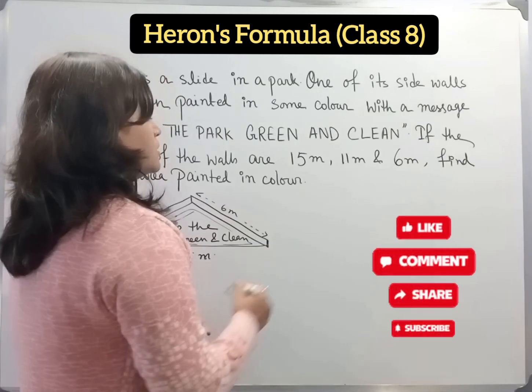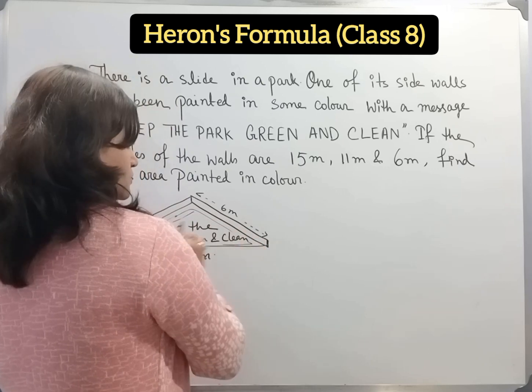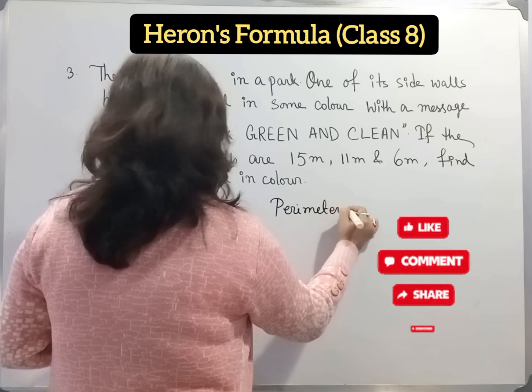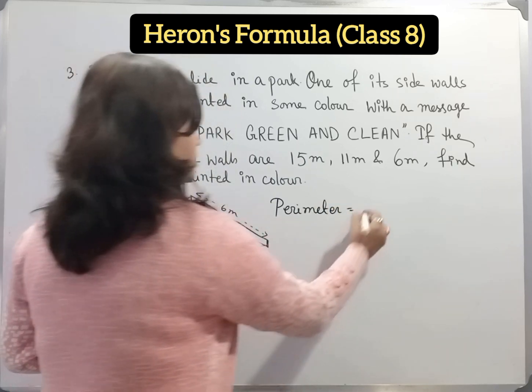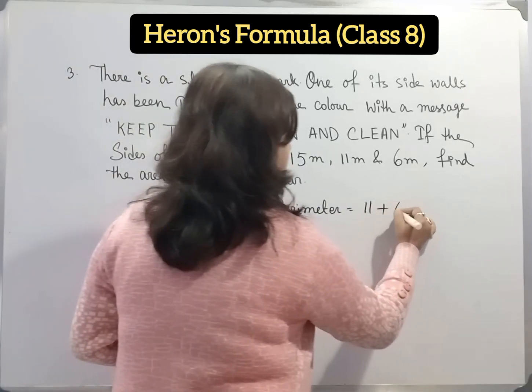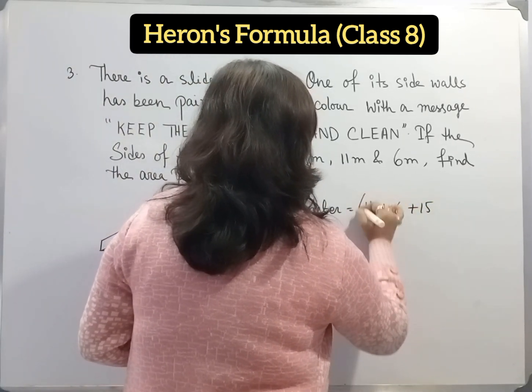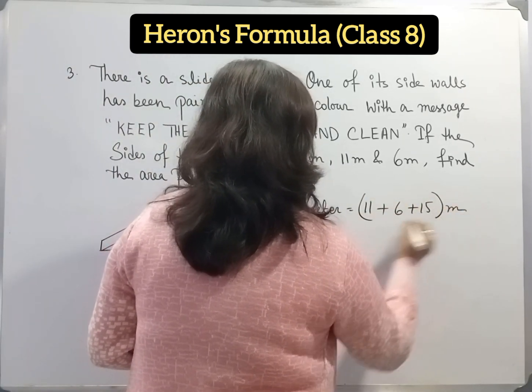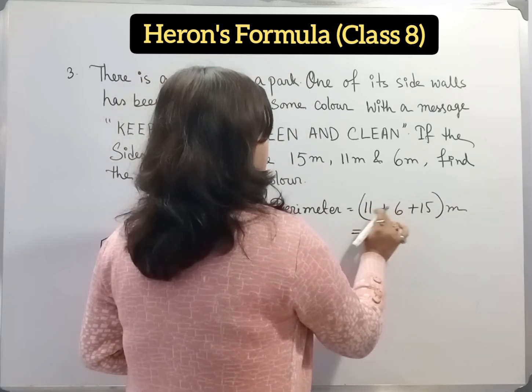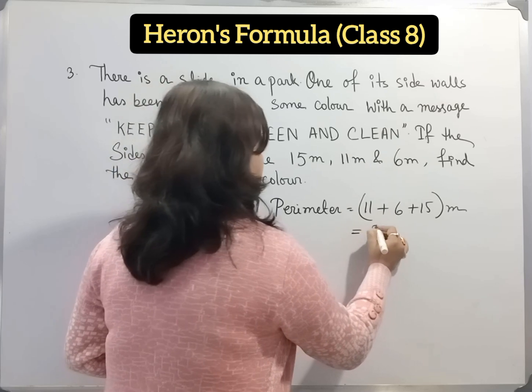Now we have to find out the perimeter of this triangular shape. Perimeter of triangle, we know that is sum of three sides. So here 11 plus 6 plus 15. 11 plus 6 is 17, 17 plus 15 is 32 meter.